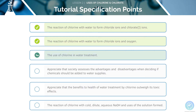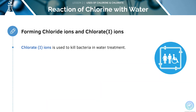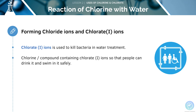Next, we will look at the uses of chlorine in water treatment. Chlorine is used in the form of chlorate ions in order to kill bacteria. This is used so that we can drink and swim in water safely. This equation is one that you should know for the formation of these ions.